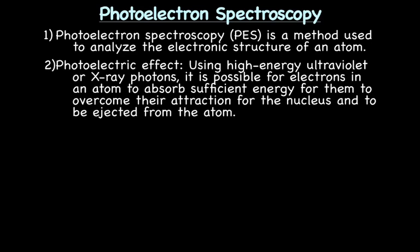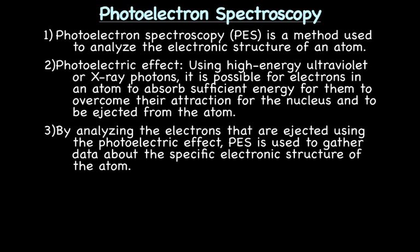So the photoelectronic effect, this is kind of how PES works. Using high energy ultraviolet or x-ray photons, it is possible for electrons in an atom to absorb enough energy for them to overcome their attraction with the nucleus and to be ejected from the atom. By analyzing the electrons that are ejected using the photoelectronic effect, PES is used to gather data about the specific electronic structure of the atom.